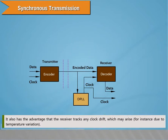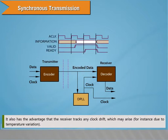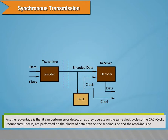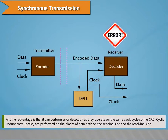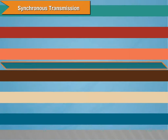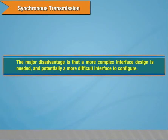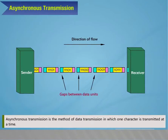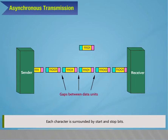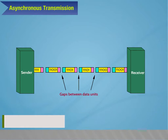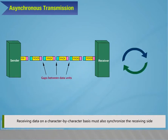Synchronous transmission has the advantage that the receiver tracks any clock drift due to temperature variation. It can also perform error detection using CRC (cyclic redundancy checks) on blocks of data on both the sending and receiving side. The major disadvantage is that a more complex interface design is needed. Asynchronous transmission is the method where one character is transmitted at a time, and each character is surrounded by start and stop bits.